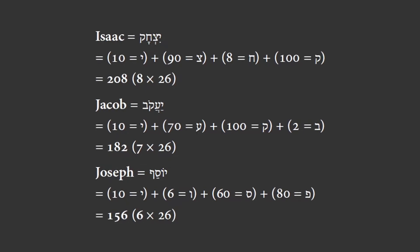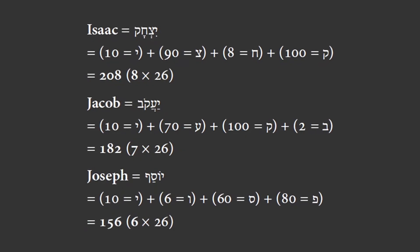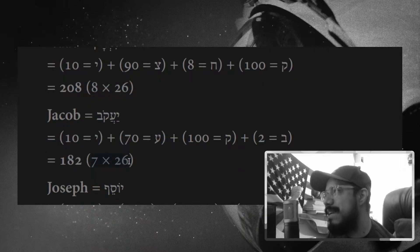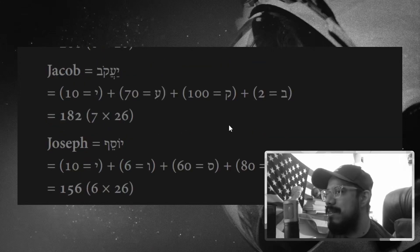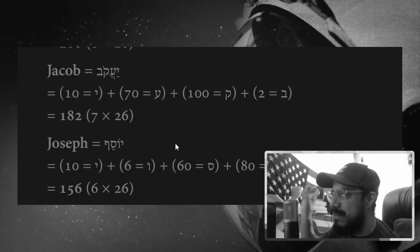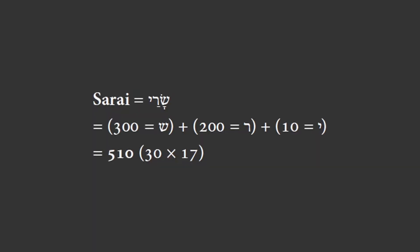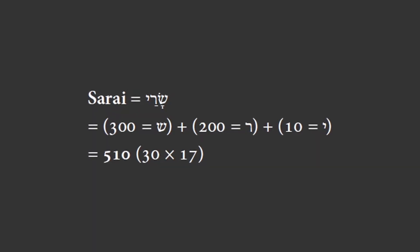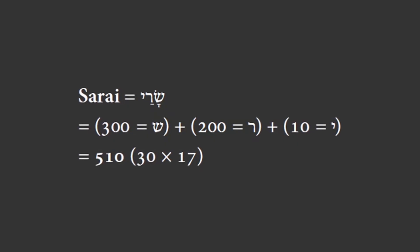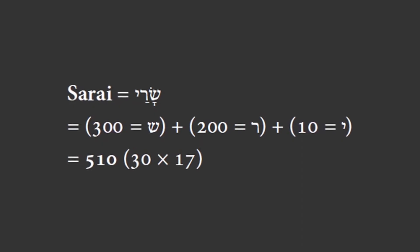In the case of Isaac, Jacob, and Joseph, here I have the number breakdown. The total value of the name Isaac is 8 times 26. His son, Jacob, the value of his name is 7 times 26. The value of his son, Joseph, is 6 times 26. So again, we have that descending number value thing going on, but they're all related to the number 26. But in the case of Sarah, at this point, her name is Sarai. The value of her name is 30 times 17. So her name is associated also with a divine name number value. So maybe that's why she's a bit special as well.